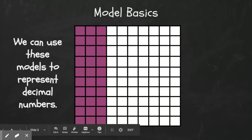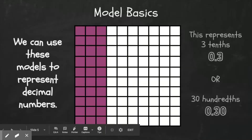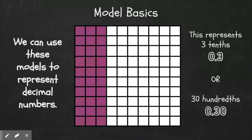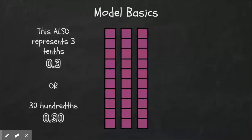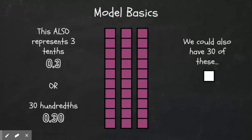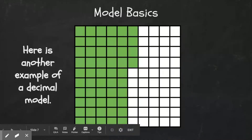This is a way to represent three tenths, or thirty hundredths. And here's another way to represent three tenths or thirty hundredths. You could also do thirty of the small ones.